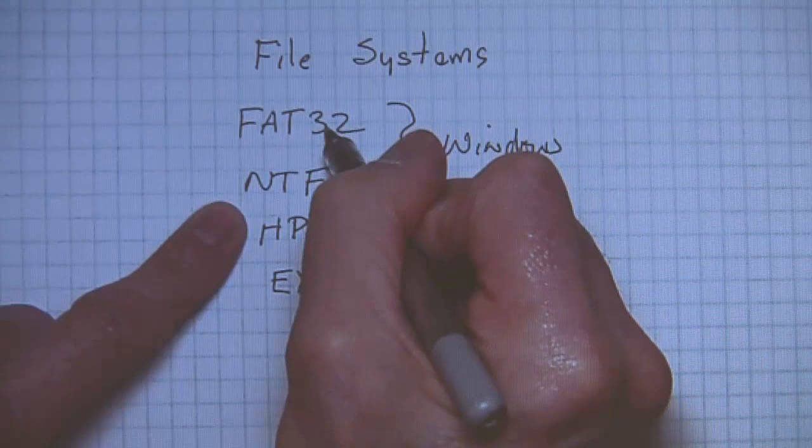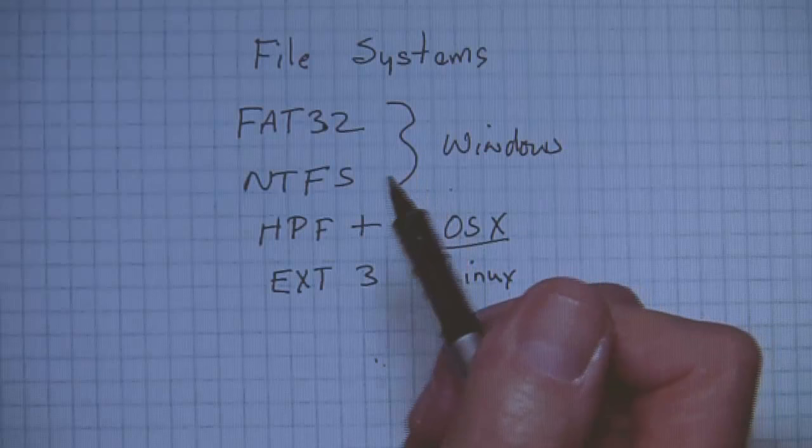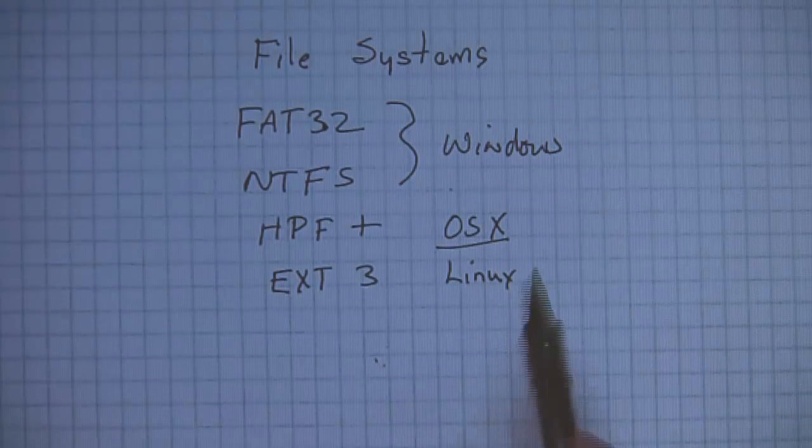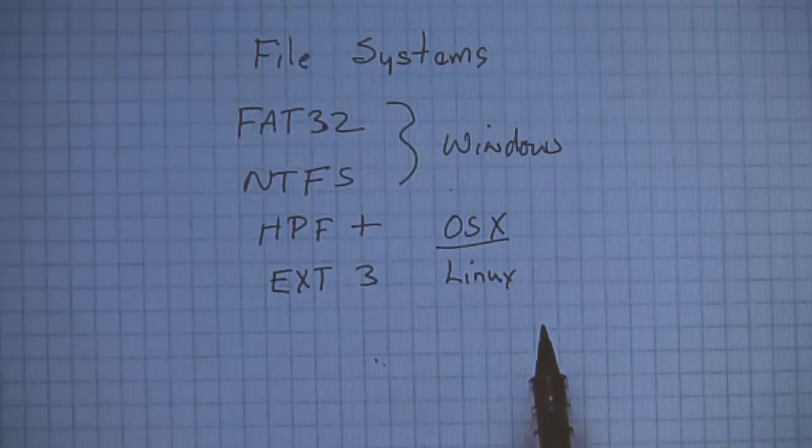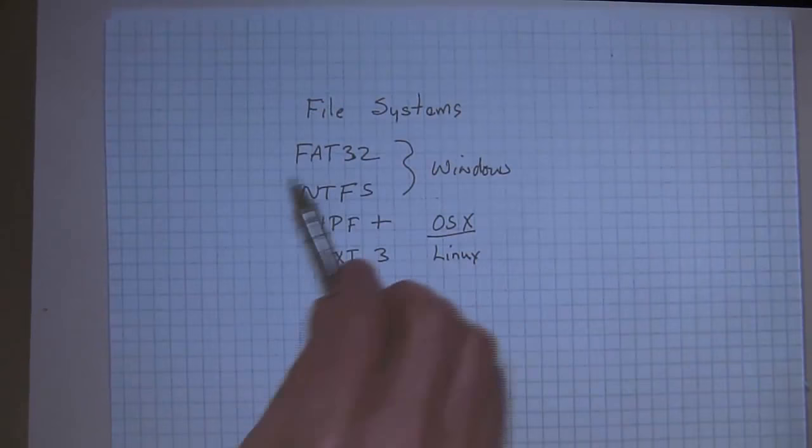The Mac will also read, so the OS X will also read FAT32. This is why all your flash drives have a file system of FAT32. Because if you have the Mac, your OS will read the flash drive as well as Windows. First thing you want to do when you get a flash drive is convert it to NTFS. Because FAT32 is a cruddy file system.